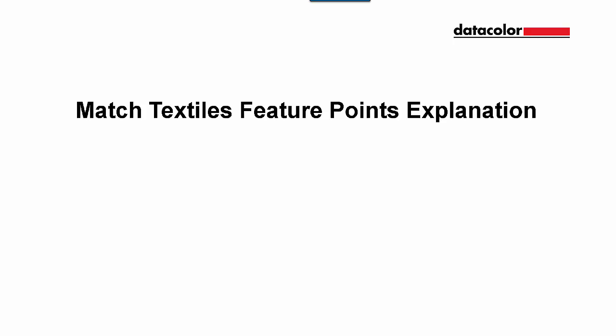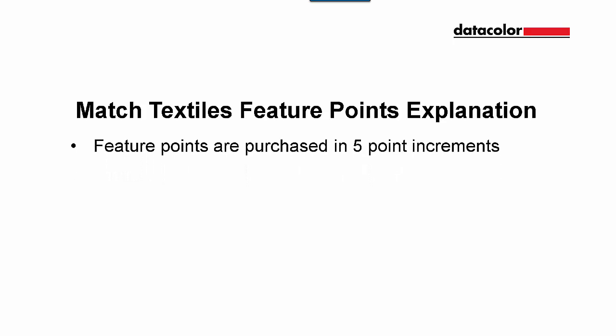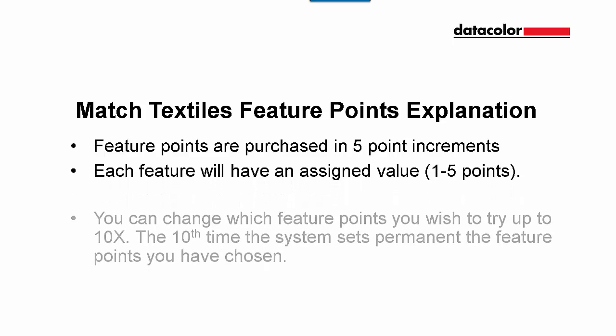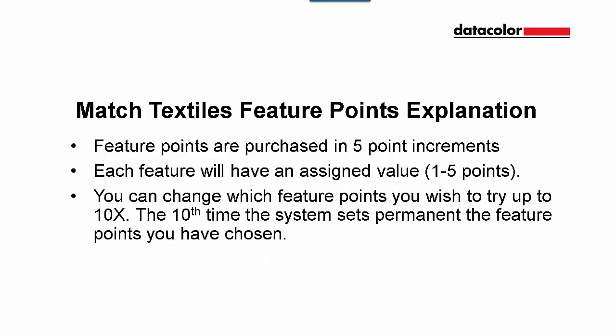This video will explain the feature points available in Match Textiles. Match Textiles is purchased with feature points in increments of 5 points. Each feature point will have an assigned value of 1 to 5 points. You can try out changes to which feature points you will use up to 10 times. After the 10th time, the feature points are set permanent.